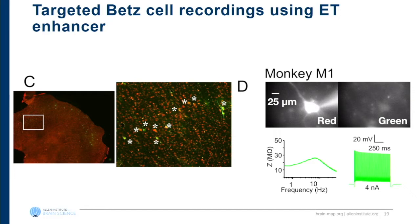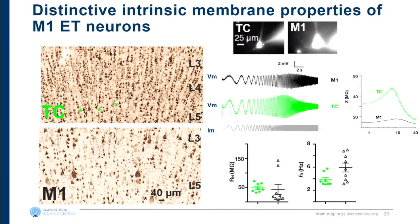We can use this tool to label ET neurons in other parts of cortex. In M1 from macaque — a part of cortex we'd never receive from surgical specimens — we have a collaboration with University of Washington for access to macaque tissue. The enhancer labels these putative Betz cells, the nice big layer 5 neurons, and we can target these cells for patch clamp and patch-seq recordings. It turns out these cells have really distinctive physiological properties — like a pyramidal neuron with spiking properties like a fast-spiking interneuron.